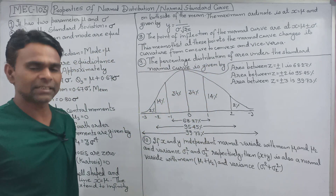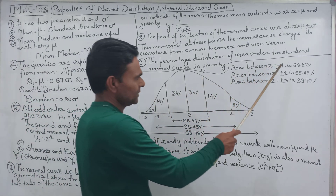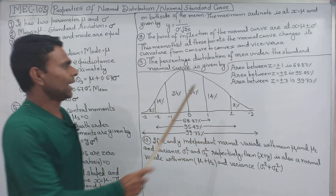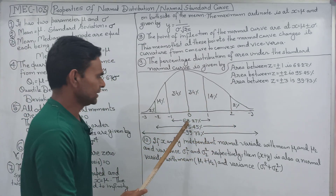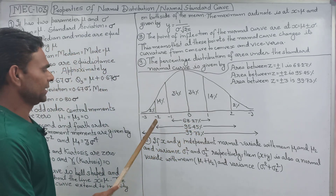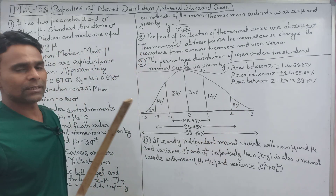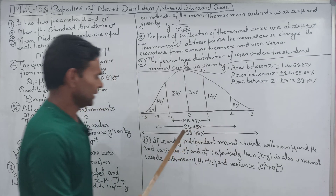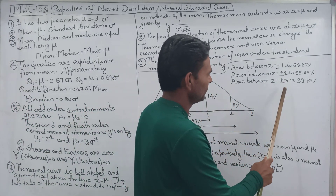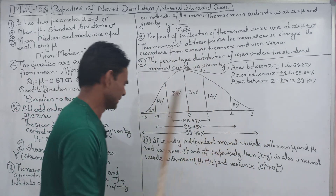The percentage distribution of area under the standard normal curve: area between z = ±1 is 68.26%; area between z = ±2 is 95.45%; and area between z = ±3 is 99.73%.